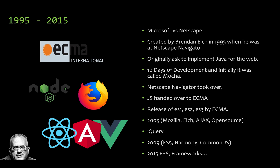From 2015 onward, ECMAScript began releasing updates every year — ES6 (ES2015), ES7, ES8, ES9 and so on. New features are released each year and the language is now stable with a strong community. This covers JavaScript from 1995 to 2015.